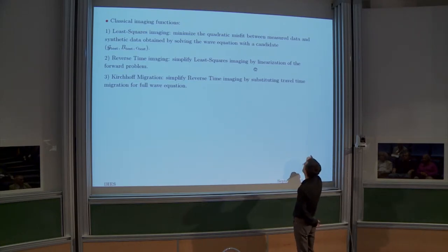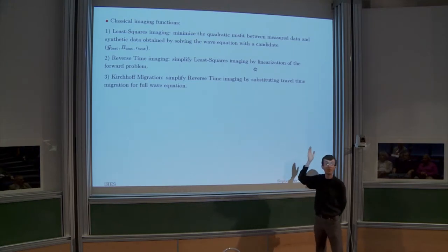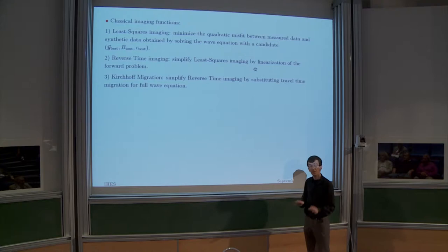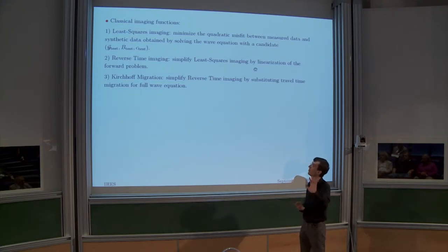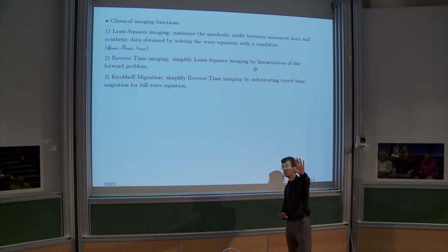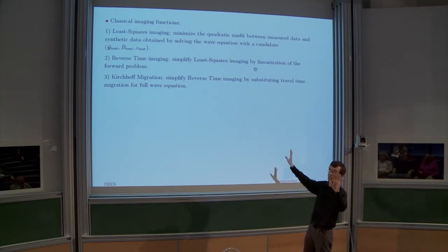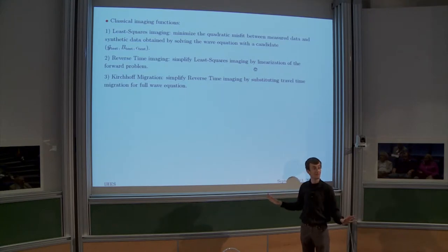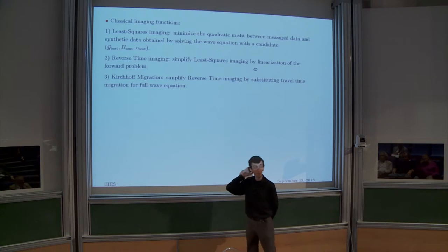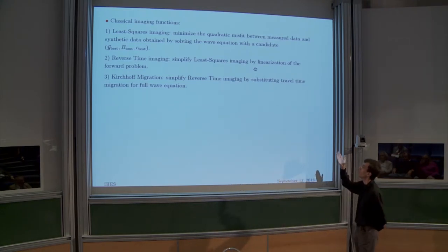So practitioners simplify even further and do Kirchhoff migration. They do a high-frequency asymptotic — a geometric optics approximation — and simply back-propagate with travel times. It's not even full geometric optics; they consider only the travel time equation and ignore the amplitude. This is what's done in practice. When you look at an echographic image of your baby, or at seismic imaging, this is Kirchhoff. In seismic imaging, a lot of effort is now put into implementing reverse time imaging.